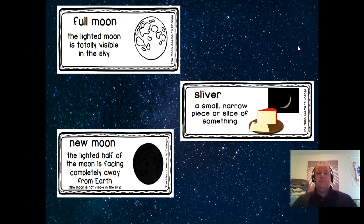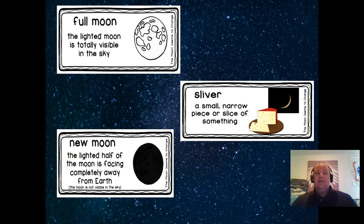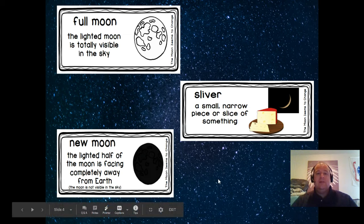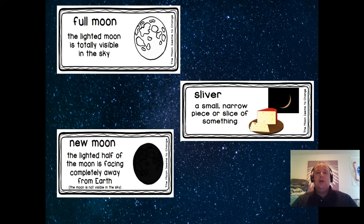Let's give it a try. Here are three vocabulary words for this first section of our text today. A full moon: the lighted moon is totally visible in the sky. Sliver: a small narrow piece or slice of something. And if you notice, they have a sliver of the moon. They also have a sliver of cheese. New moon: the lighted half of the moon is facing completely away from the earth. So when you look up at the sky at night and you see the moon and it looks kind of dark, you can see a little bit of it, but it's mainly dark. That is a new moon.